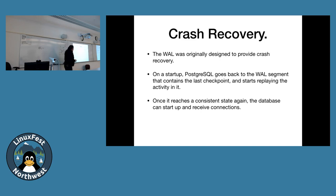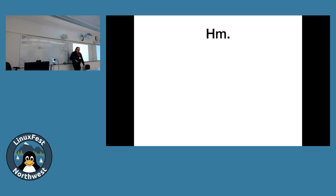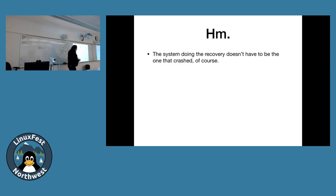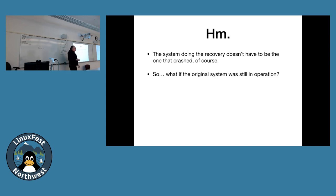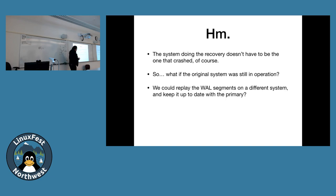This raises an interesting question: we have the write-ahead log and we have the database. If we have a consistent copy of the database, we could apply the write-ahead log. What if we did it to a different system than the one that crashed? What if we took two copies of the same database and applied the WAL generated from one to the other? Every time the primary generated a 16-megabyte WAL segment and wrote it to disk, we moved it to the other system and applied it — we'd effectively be replicating.